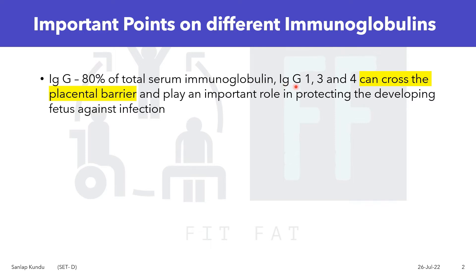IgG has different subtypes, and IgG1, IgG3, and IgG4 can cross the placental barrier and play an important role in protecting the developing fetus against infection.